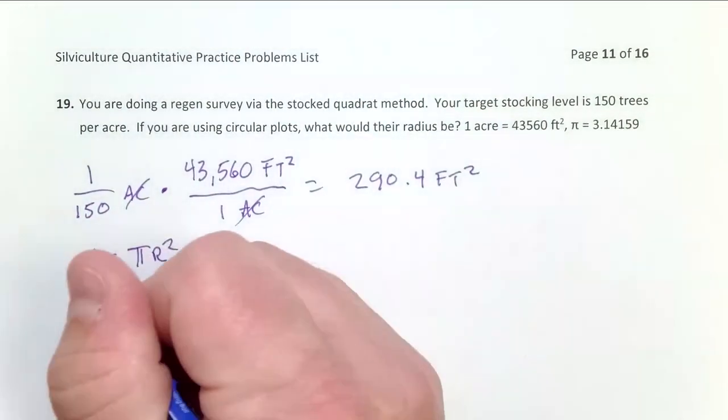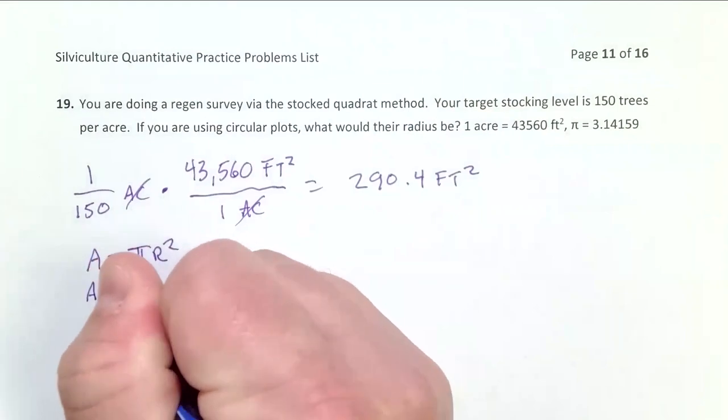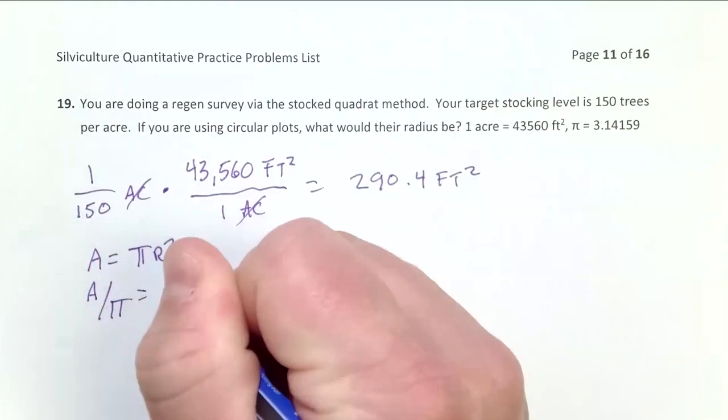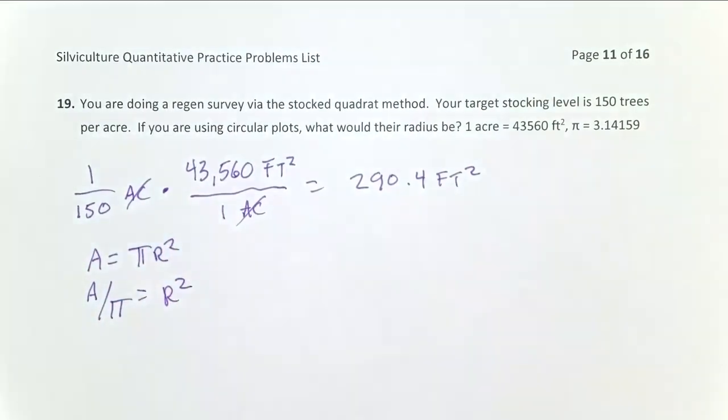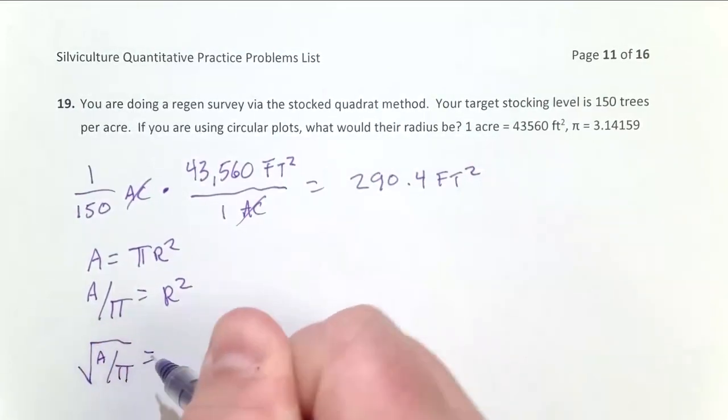So I divide both sides of this equation by pi. Area over pi equals r squared. I now have to get rid of the square on r. So I take the square root of both sides of the equation. So the square root of area over pi equals r.